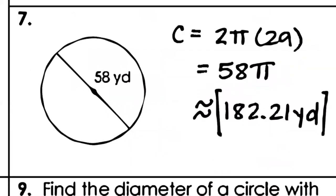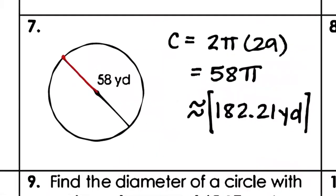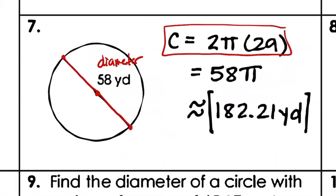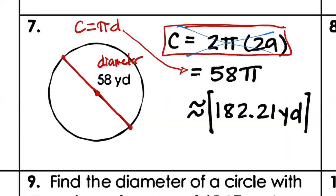For number seven, they give us the diameter, so we use Circumference = πd. The diameter is 58 yards. Some might first find the radius (r = 29) and use 2πr, but that's extra work — if they give you diameter, just use C = πd. So C = 58π ≈ 58 × 3.14 ≈ 182.21 yards. Just yards, not yards squared. We only use squared units for area.